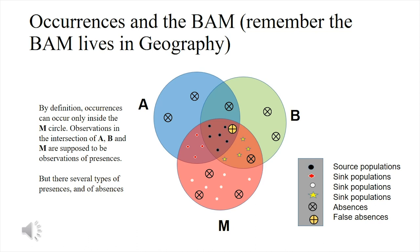You can also have different types of absences — real absences like the crosses inside the circles in three places — or even false absences, which are mistakes. For example, the symbol with a plus sign on a yellow background takes place inside the region where the species is present for all three reasons represented by the A, B, and M circles, but the researcher went there and for whatever reason couldn't detect the individuals of the species.